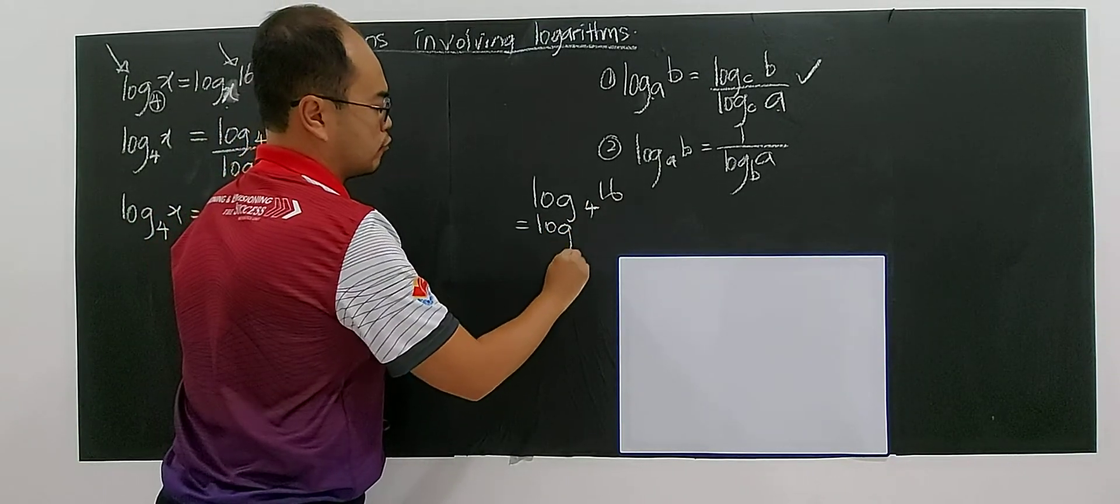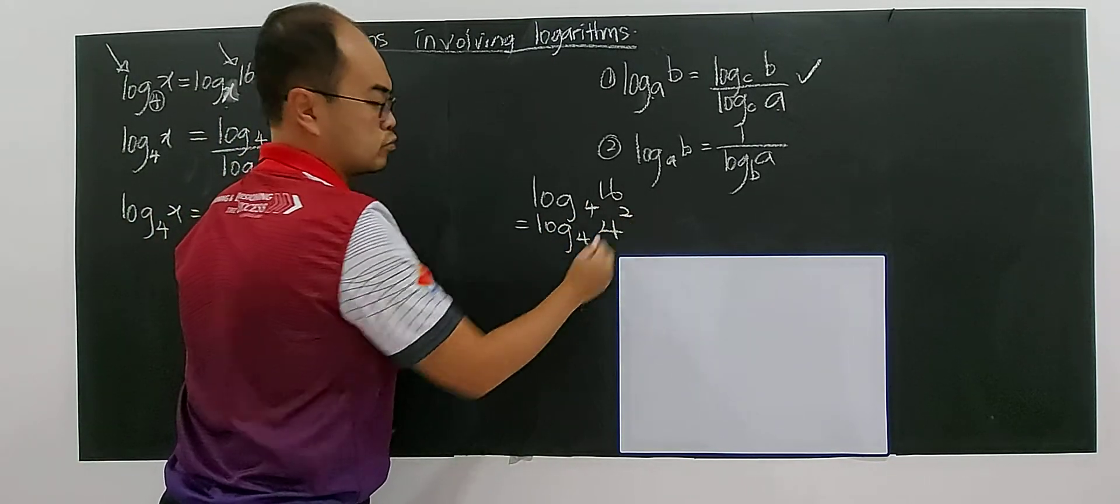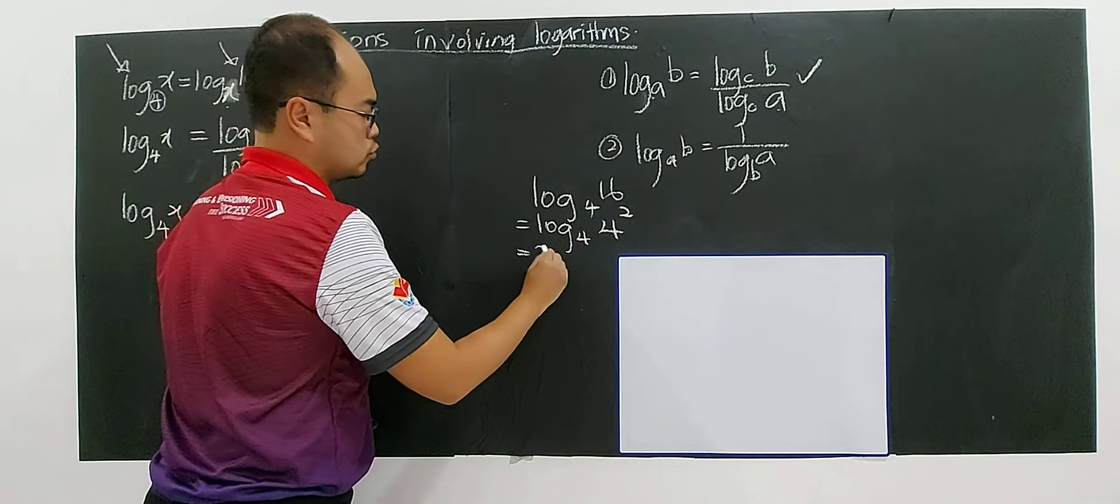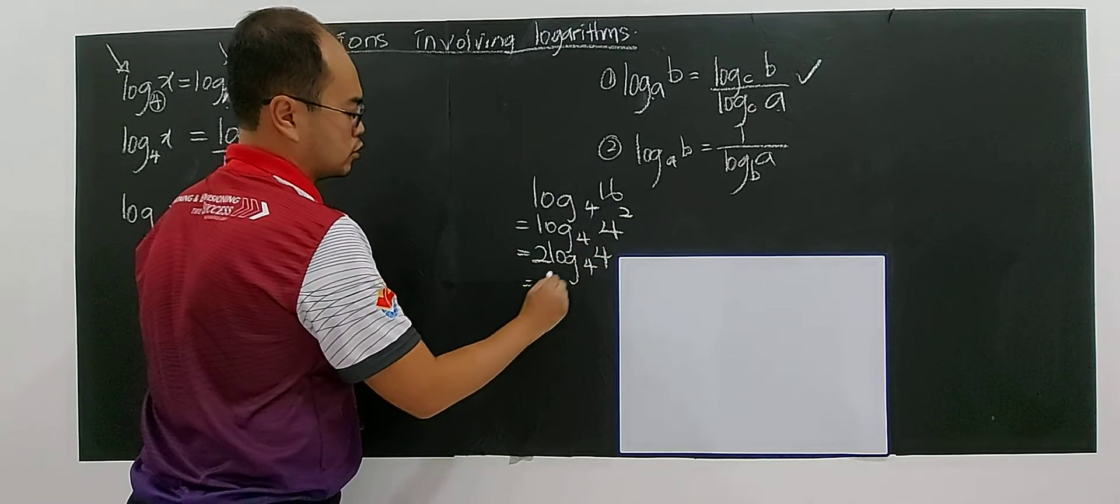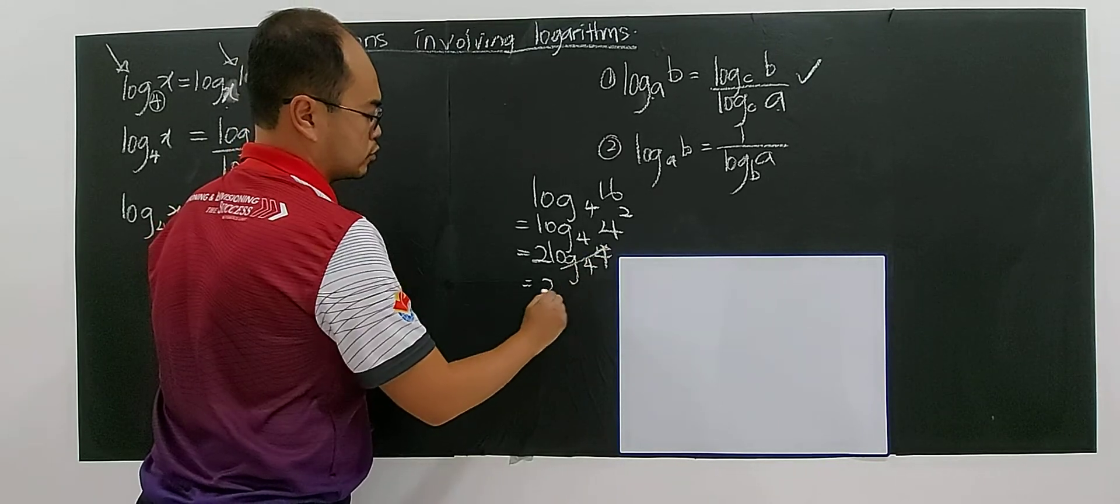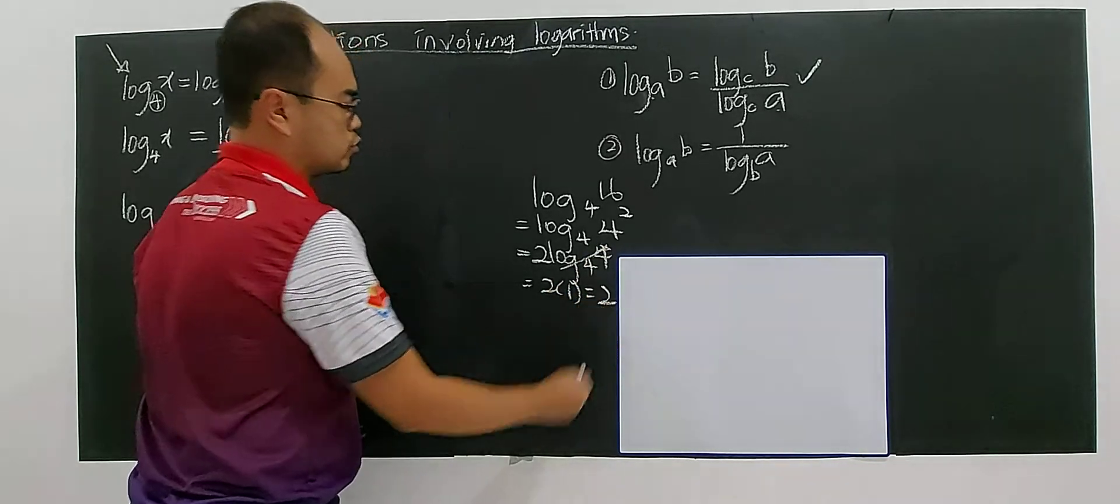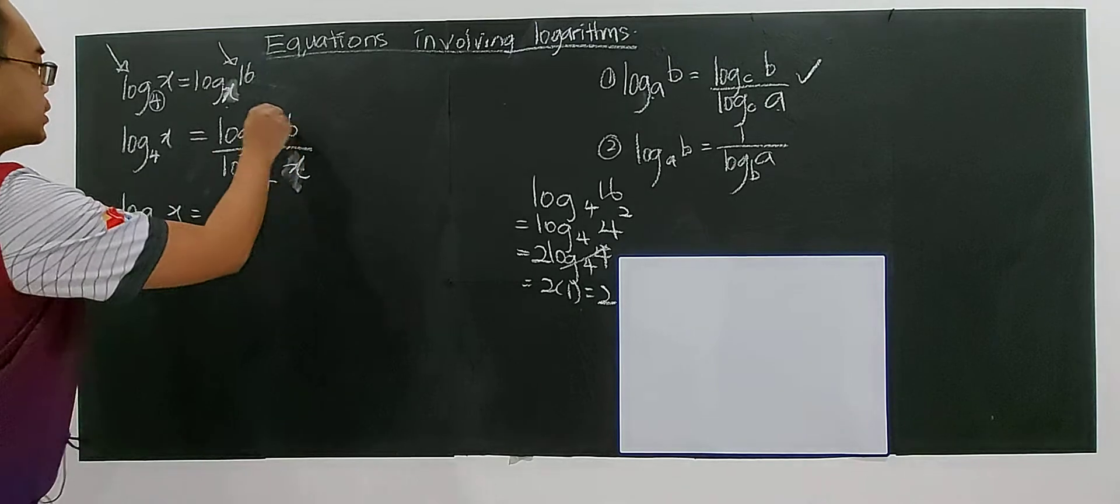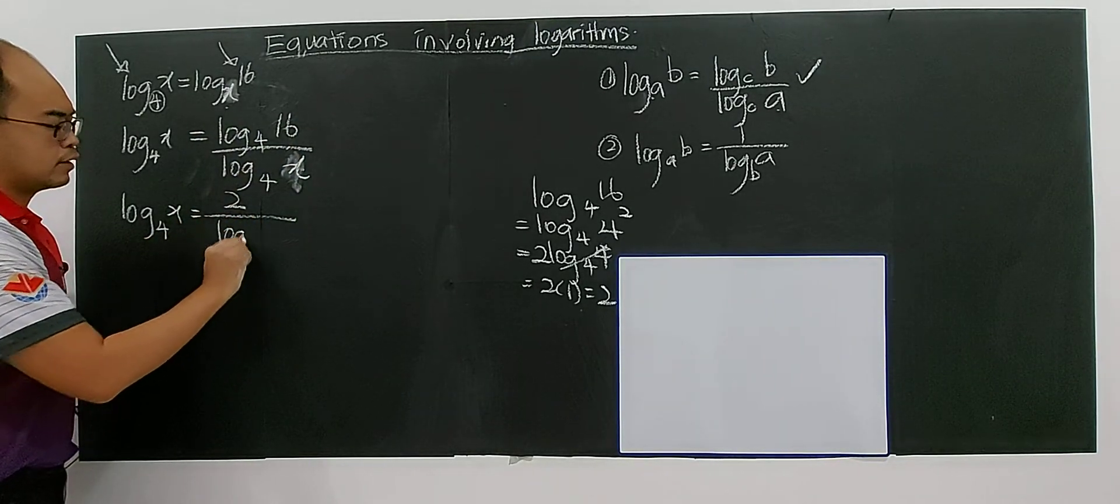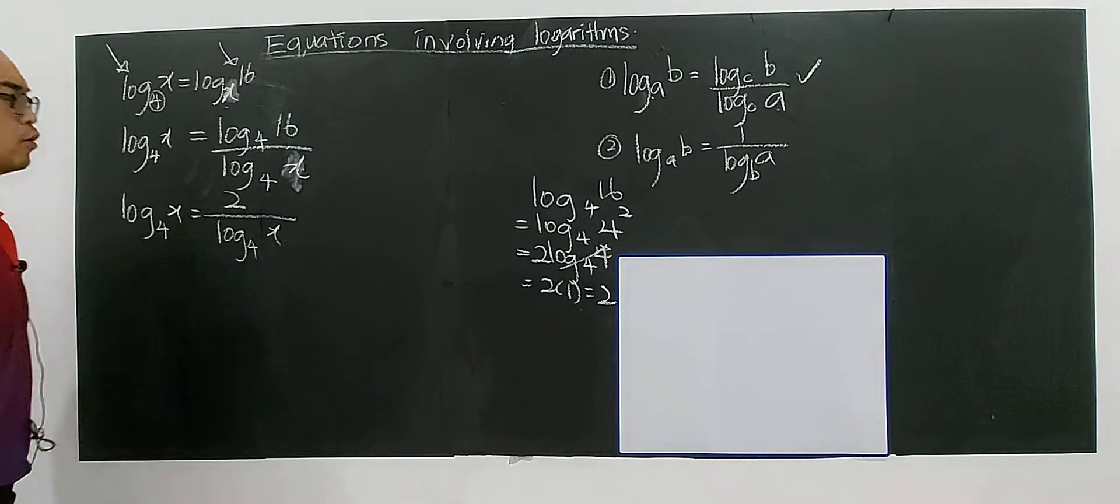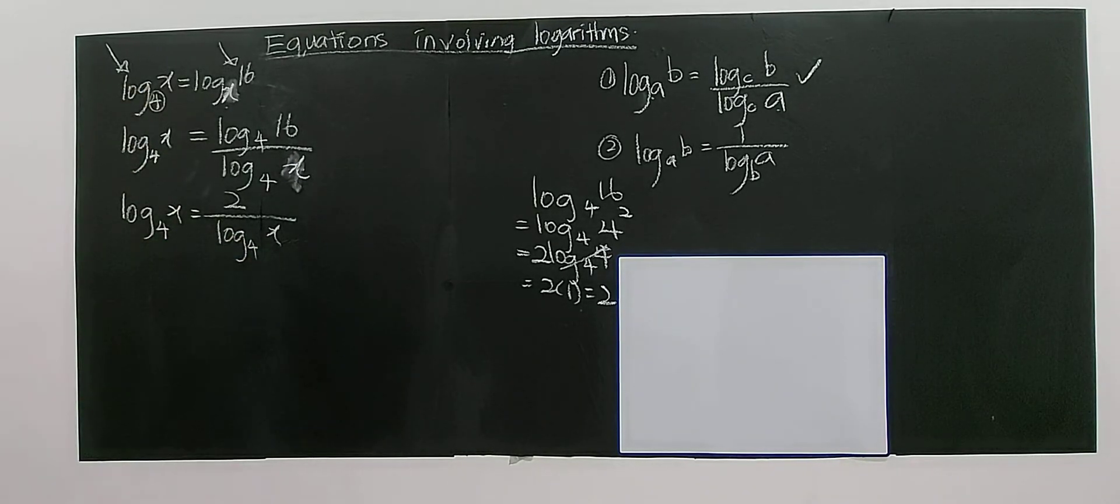It's actually log 4 to the power of 2. Then you can bring 2 to the front, log 4 base 4. So this one you have 1. So 2 multiplied by 1, you have 2. So you have simplified, become 2 over log X base 4. This is the objective.